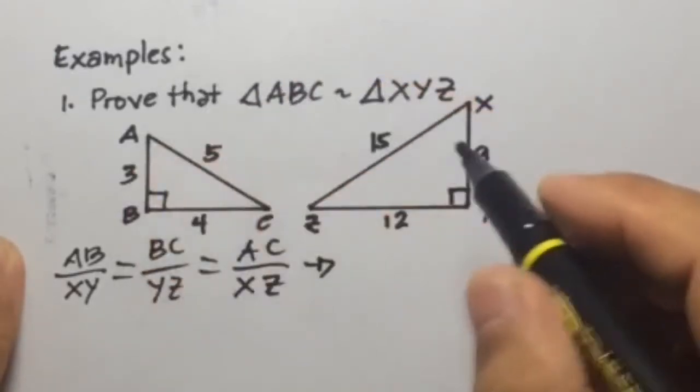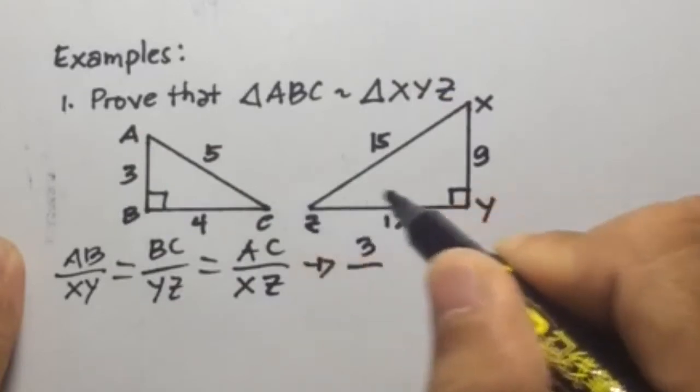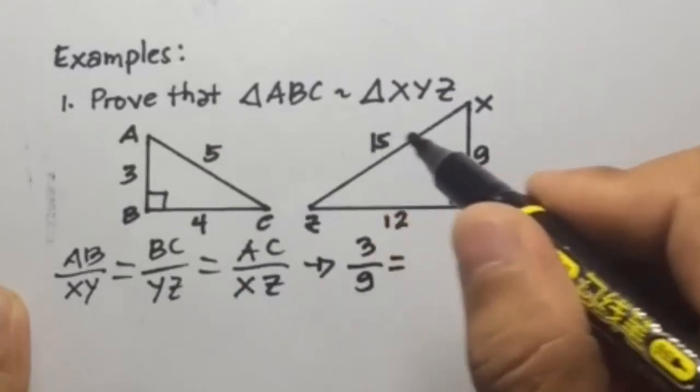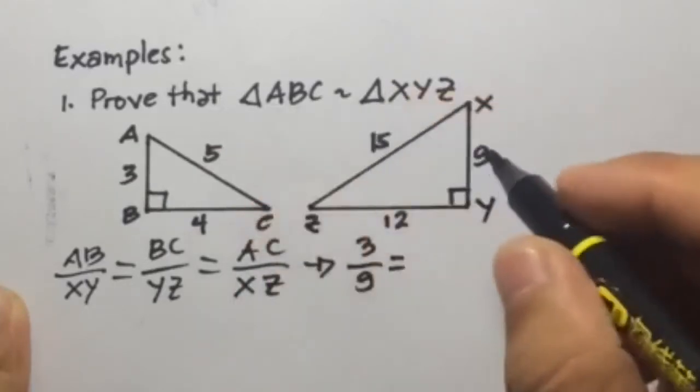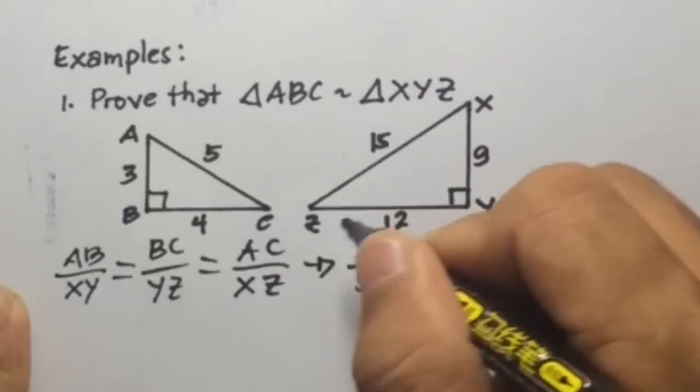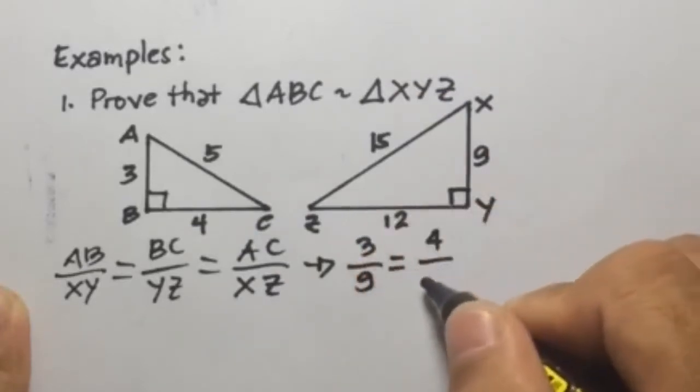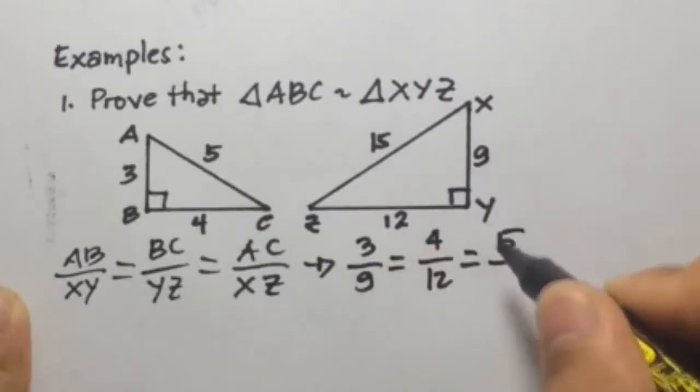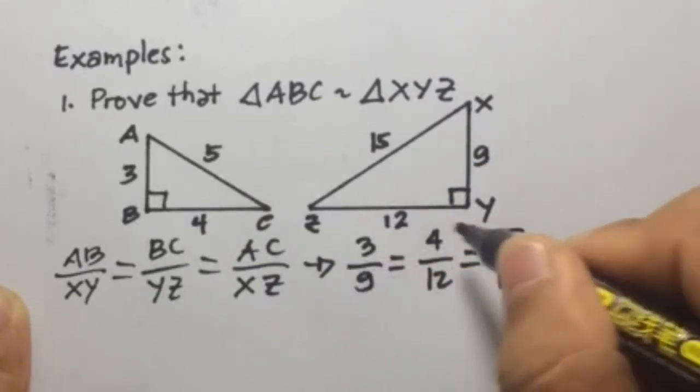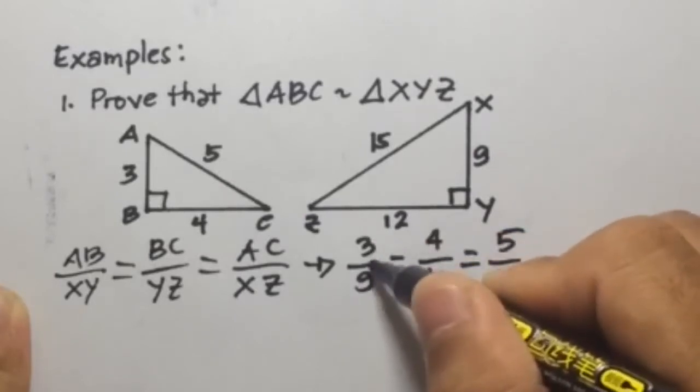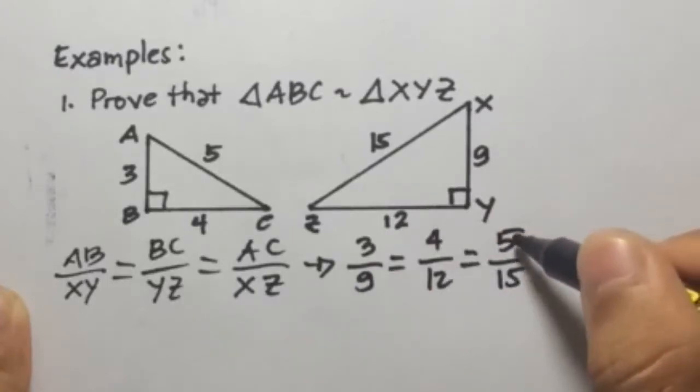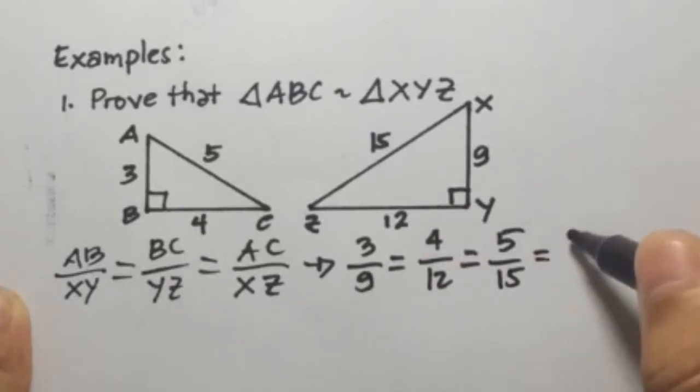So given that AB is 3, 3 over XY is 9, then BC is 4, YZ is 12, then AC is 5, XZ is 15. So if we're going to simplify these fractions here, 3 over 9 is 1 third, 4 over 12 is also 1 third, 5 over 15 is also 1 third, so all of these three equal 1 third.